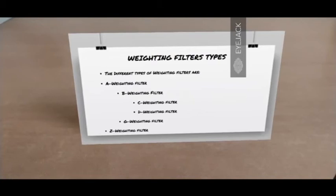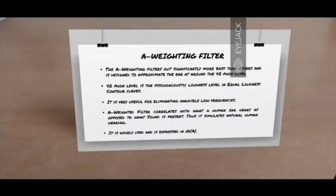The A weighting filter filters out significantly more bass frequencies compared to other frequencies, and is designed to approximate the ear at around the 40 phon level. Now, the 40 phon level is the psychoacoustic loudness level, as we saw in the equal loudness contour curves. A filters are very useful for eliminating inaudible low frequencies. So, what the A filter does, is it filters out the bass region in the spectrum. So, it correlates with what a human here hears, as opposed to what sound is present.